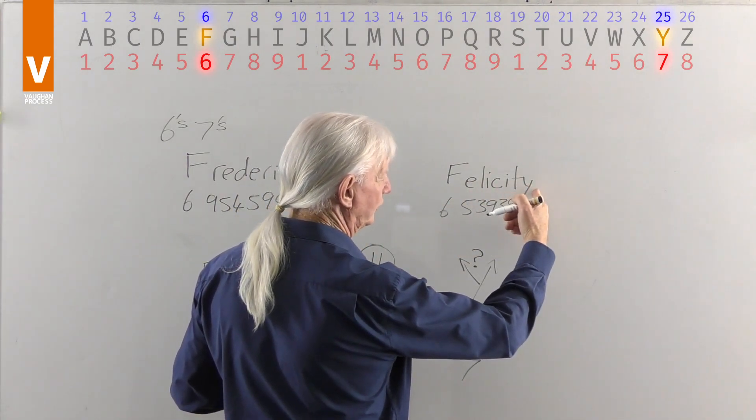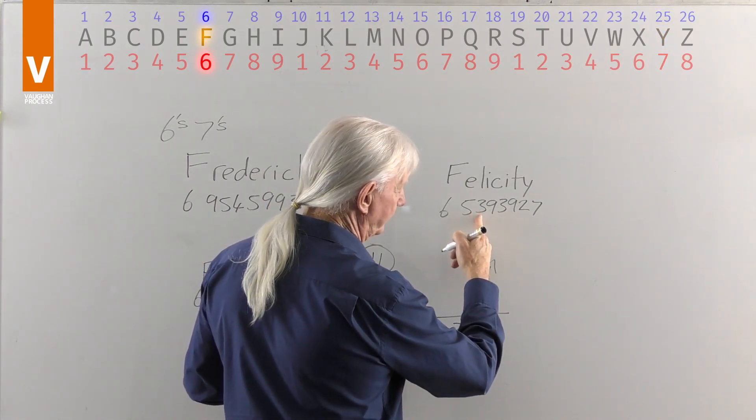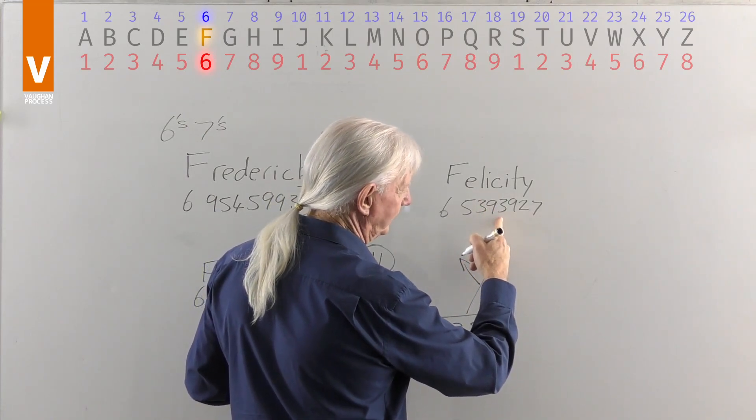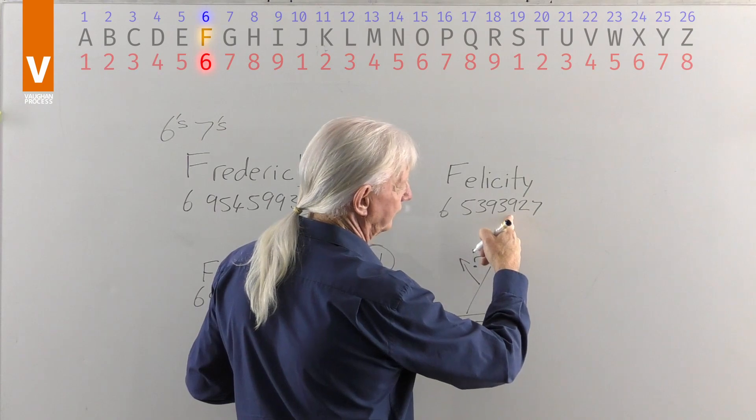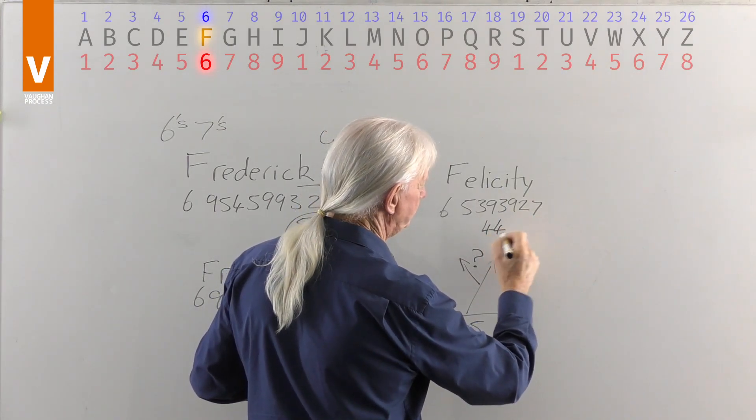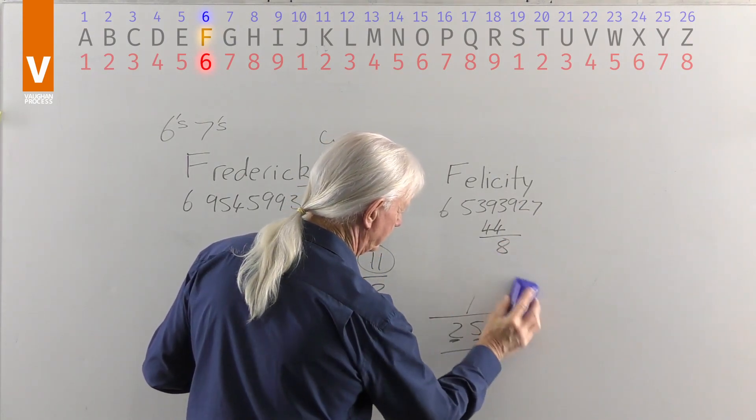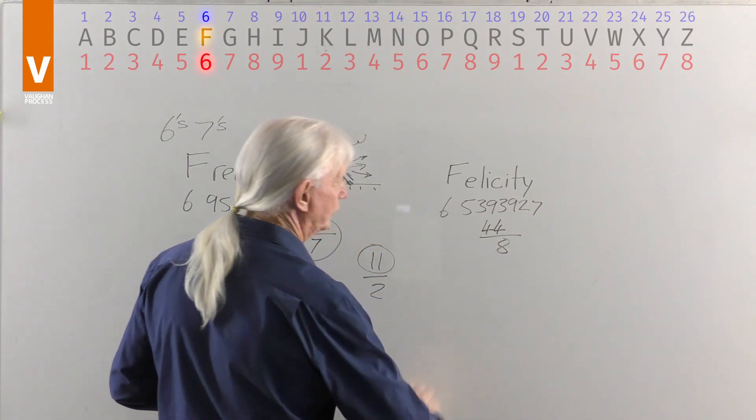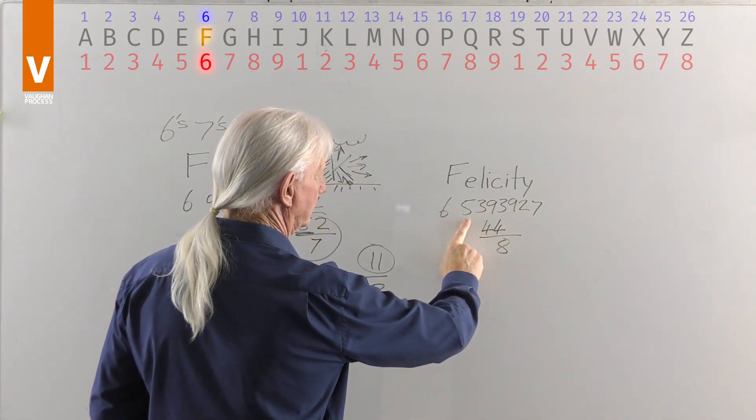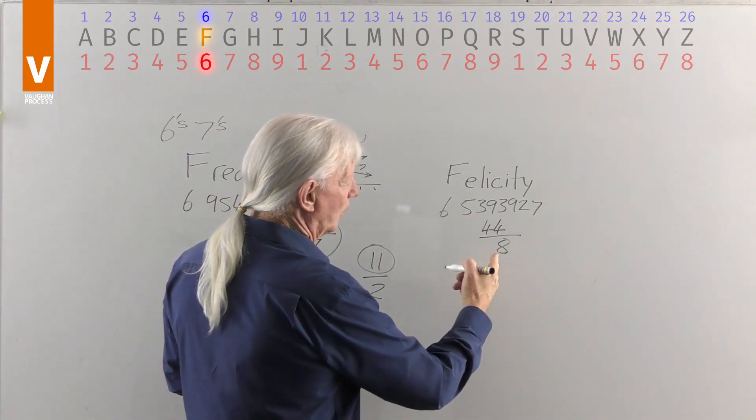So they've got to learn to make the right choices. 6 and 5 is 11, 11 and 3 is 14, 23, 26, 35, 37, 44. So that adds up to 44.